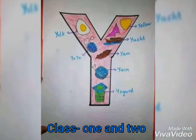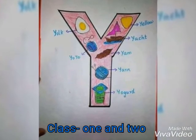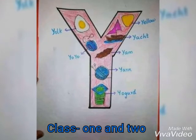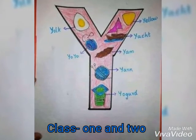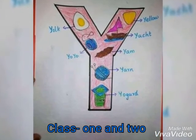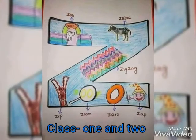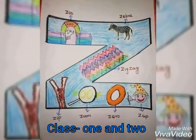Y for yo-yo, yo-yo means ek dharanir khelna. Y for yalu, yalu means halud.